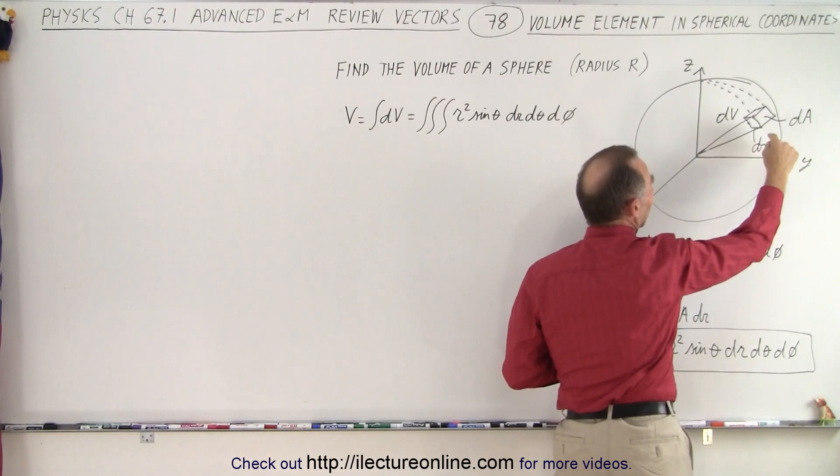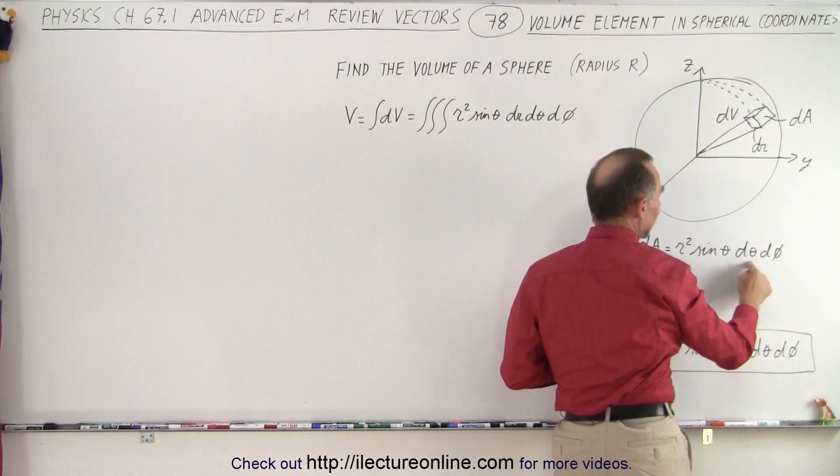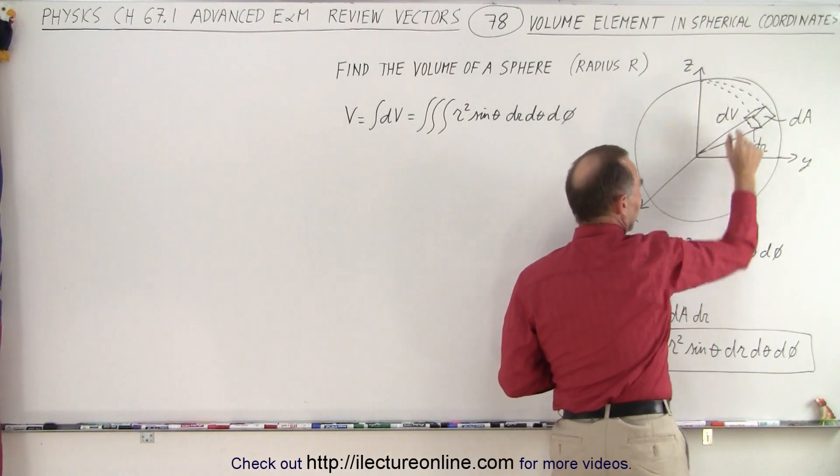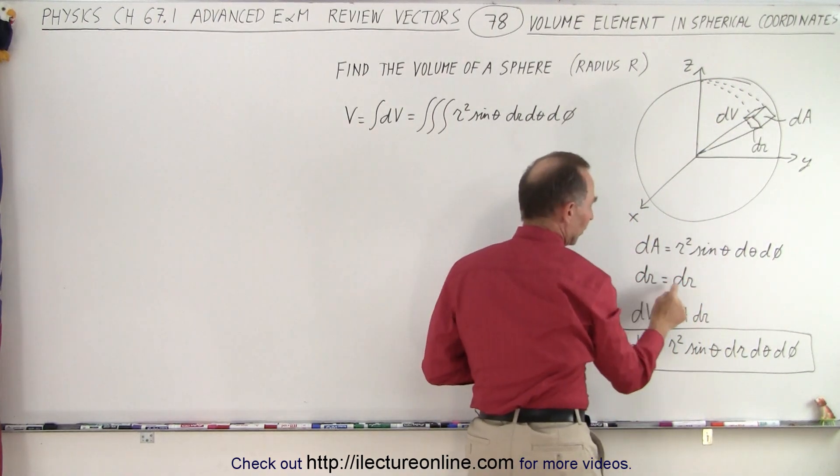So over here we have simply dr d theta r dφ but it gets smaller and smaller as we go up. Now we multiply the times the thickness dr. So dr is the thickness.